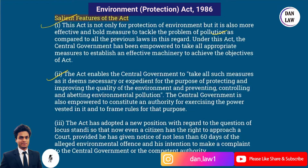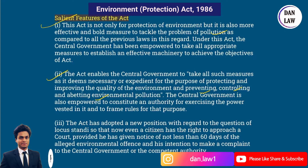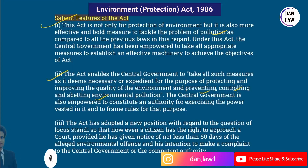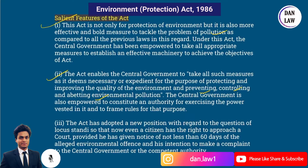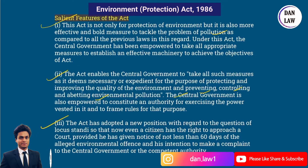The Act enables the central government to take all such measures as it seems necessary or expedient for the purpose of protecting and improving the quality of environment and preventing, controlling, and abating environmental pollution. The central government is also empowered to constitute an authority for exercising the powers vested in it and to frame rules for that purpose. The Act has also adopted a new position with regard to locus standi — now even a citizen has the right to approach a court, provided he has given a notice of not less than 60 days of the alleged environmental offense and his intention to make a complaint to the central government or competent authority.